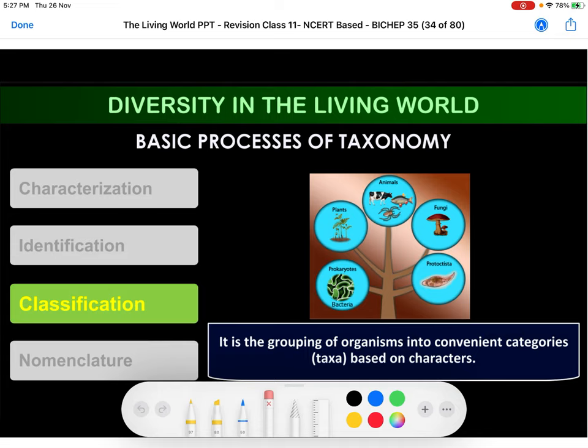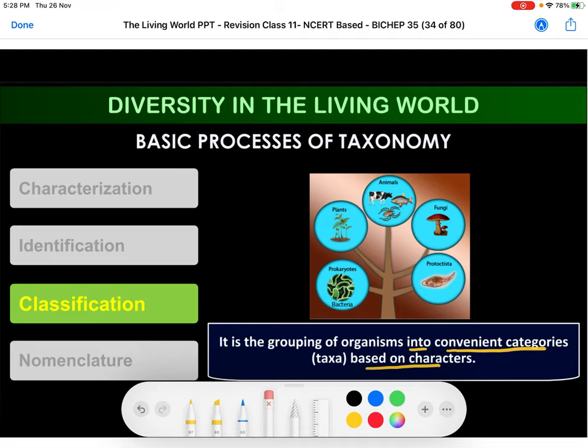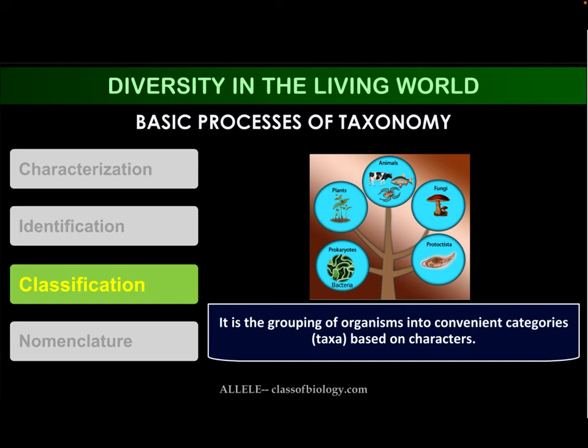The third step is classification. It is the grouping of an organism into convenient categories. If it is found in a reference book, you can place it at a particular group based on its characters. That is called classification — classifying them into a particular group.